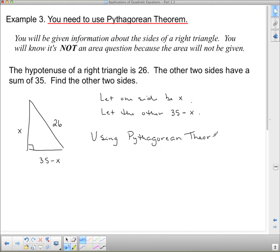So, I'm actually going to say that. I'm going to say using Pythagorean Theorem, which is a squared plus b squared equals c squared. So, in this case, we have x squared plus 35 minus x all squared equals 26 squared.